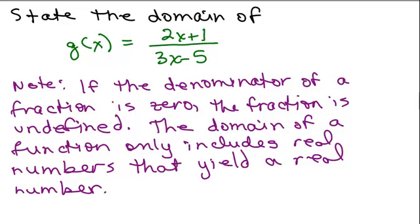Here's our next one. In g of x, we have a fraction. So here's the trick. If the denominator of a fraction is zero, the fraction is undefined, which means it would not be a real number. So in this particular function, we have to make sure that we don't let x be any number that yields a zero in the denominator because then that would not be a real number when we plug in that value.